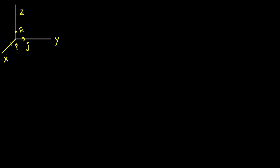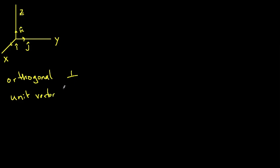Base vectors are a set of orthogonal — orthogonal means perpendicular — unit vectors. Those are two key words. Orthogonal means perpendicular, and unit vectors means they are of length one.